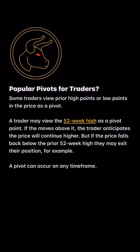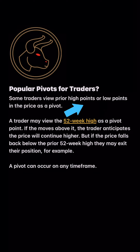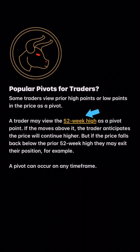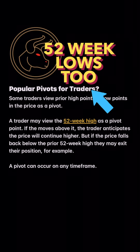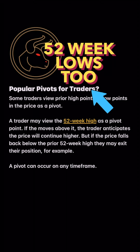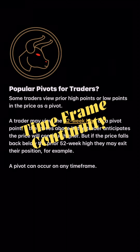Popular pivots for traders: some traders view prior high points and low points in the price as a pivot. A trader may view the 52-week high as a pivot point — if it moves above it, the trader anticipates the price to continue higher. But if it falls below the 52-week high, we may look to exit and play the reversal off of that pivot point. We could look at the 52-week low too. It's also a note that the pivot can occur at any time frame, so what we're really looking for is time frame continuity.